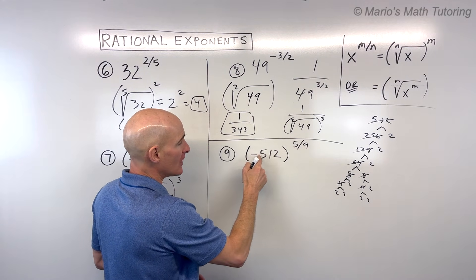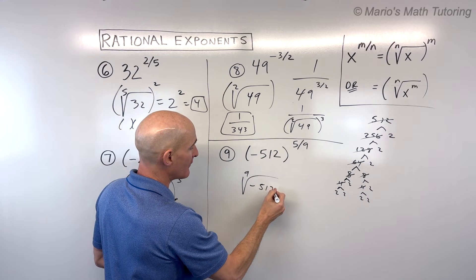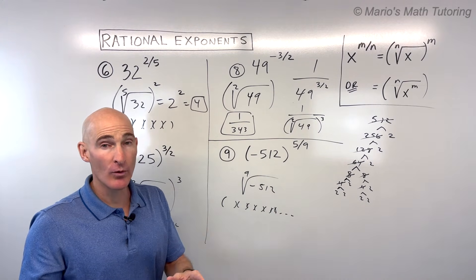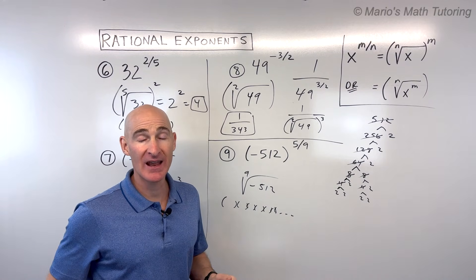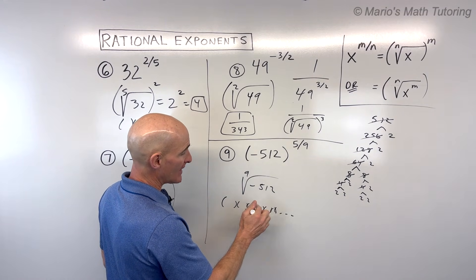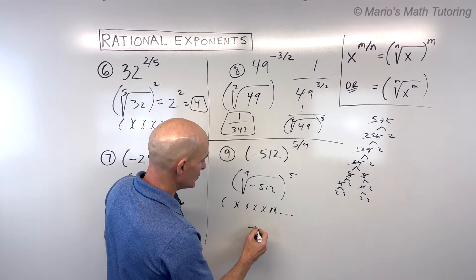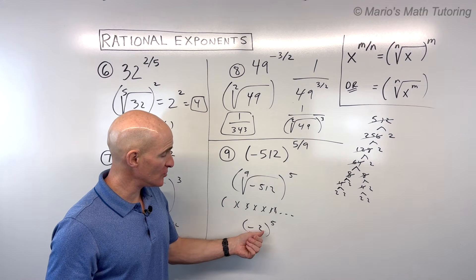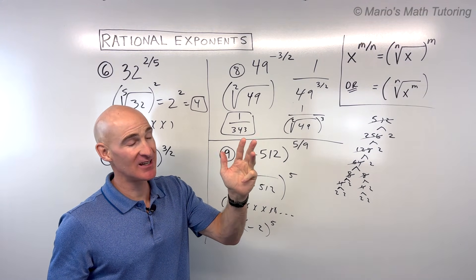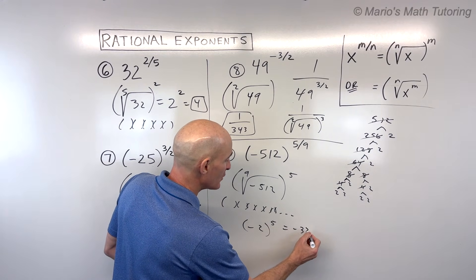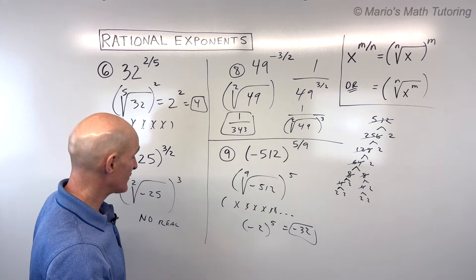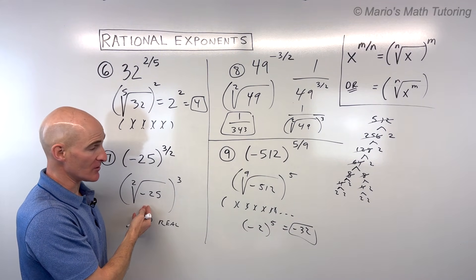Now, this is the ninth root of negative 512. When you take an odd root of a negative number, an odd count of negatives gives a negative result, so the ninth root of negative 512 is negative 2. Then negative 2 to the fifth power: (−2)×(−2)=4, ×(−2)=−8, ×(−2)=16, ×(−2)=−32. You can take the odd root of a negative number, but not the even root — that gives imaginary numbers.